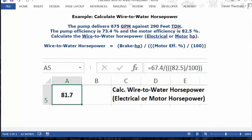In A1 you will see 81.7, which is the answer to this problem: 81.7 wire-to-water horsepower. So that's the answer.